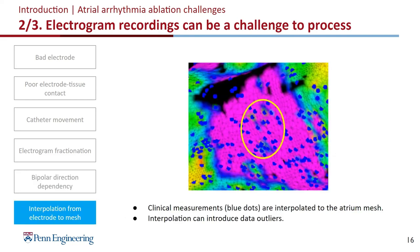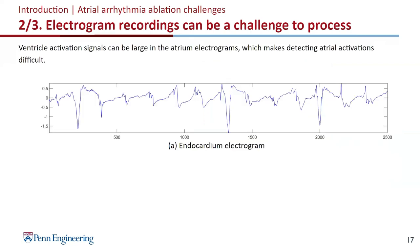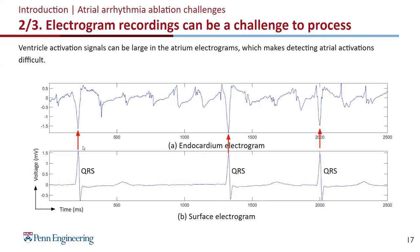Here is the data interpolation problem. Interpolation can introduce data outliers — the blue dots are data points acquired, and we need to interpolate them into the atrium mesh. Within the yellow circle there are some smaller greenish regions that don't make much sense — they can be interpolation errors. And lastly, we have ventricle interferences. This is an endocardium electrogram, but there are three very large signals that actually come from the ventricle. Because the ventricle has much stronger muscles, ventricle contractions are often picked up in the atrium, so we need to remove these ventricle interferences.